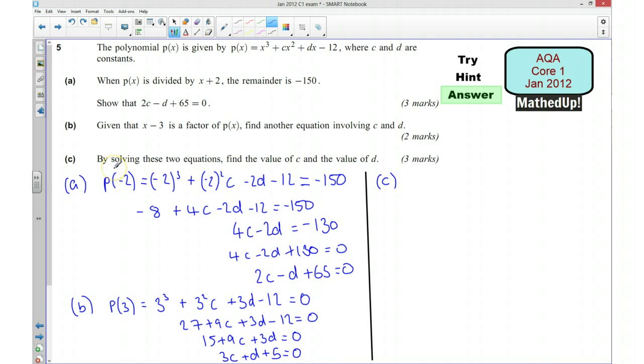We're told by solving these two equations we need to find the values of c and d. So I'm just going to write down the equations again just so we can see clearly what's going on. So we've got 2c minus d plus 65 is equal to 0, and I'm going to have 3c plus d plus 5 equals 0. So what we're going to do is we're going to solve these equations simultaneously. So I'm going to aim to eliminate the d's. So actually by adding these equations together, 2c and 3c is going to give me 5c, and negative d plus d will cancel each other out. 65 plus 5 is going to give me 70, so I've got 5c plus 70 is equal to 0.